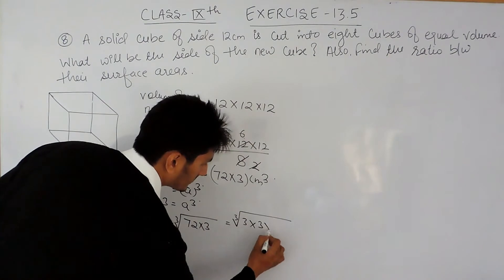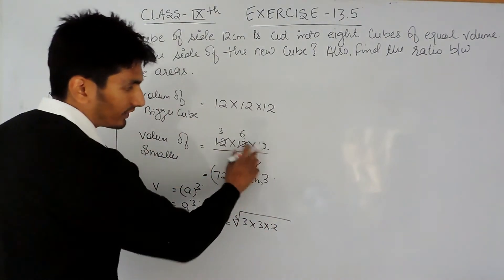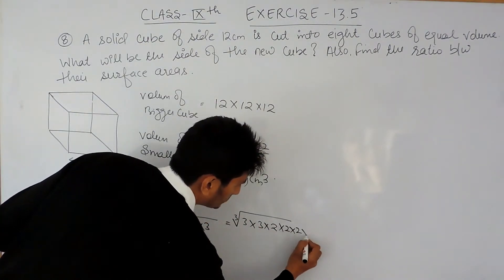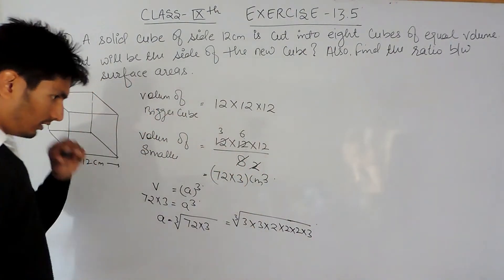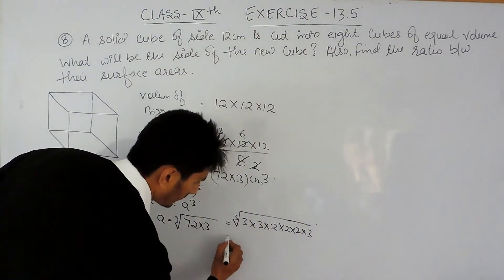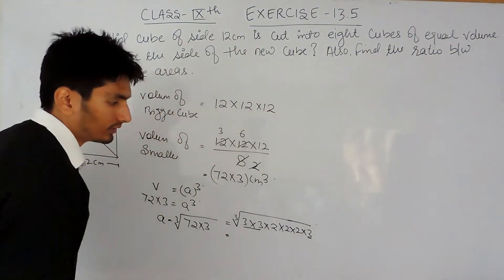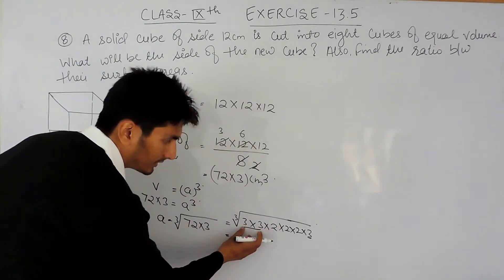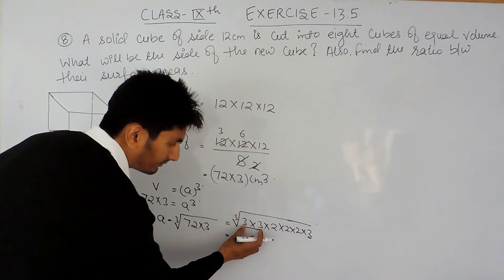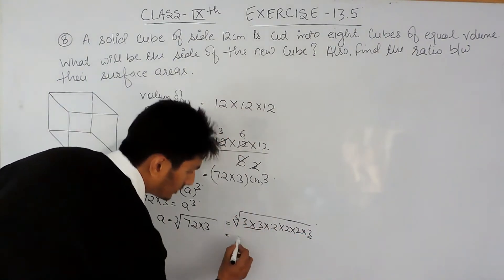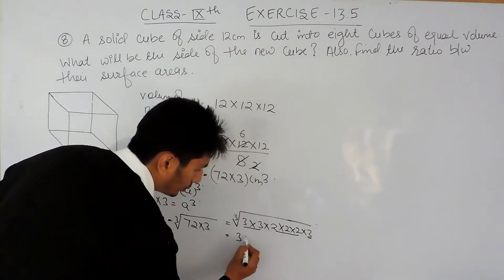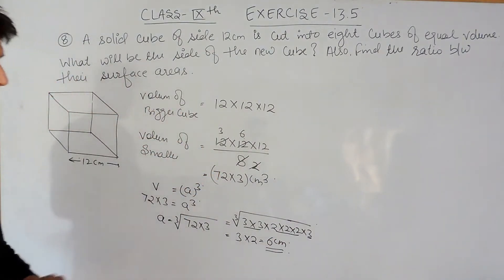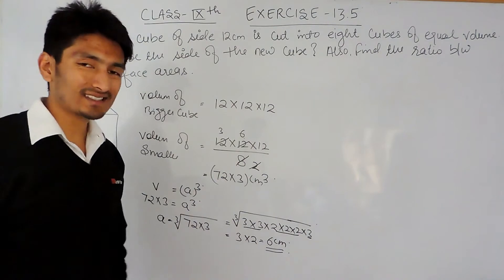So 3 will remain as it is. This is 6, so 6 can be written as 3 multiplied by 2. And 12 can be written as 4 multiplied by 3, and 4 can be written as 2 multiplied by 2 multiplied by 3. Now I have to make a group of 3 values, or you can say 3 factors. So the first group of 3 factors is 3, taking 1 common, and the second is 2. So here, the edge of this smaller cube should be 6 centimeters.